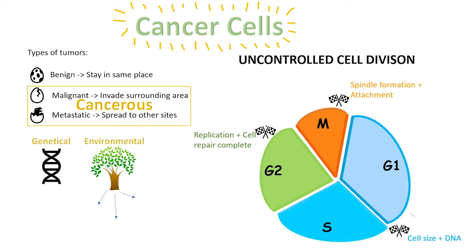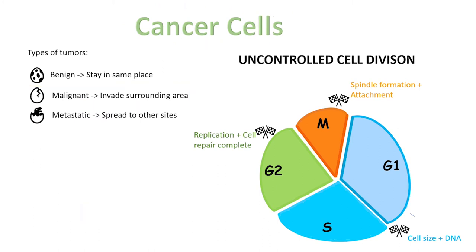Factors that increase the rate of cancer are genetic and environmental factors. While genetics plays a large role in cancer, cancer is not inherited. Genetics causes cancer when mutations occur in the somatic cell. An example of a genetic factor is virus. Environmental causes develop over a period of time and can include exposure to UV rays and pollution. These agents alter gene expression.